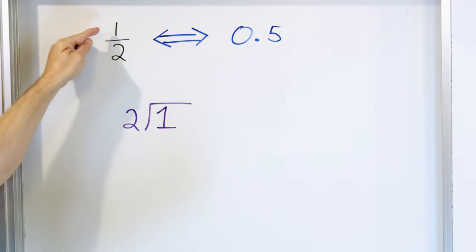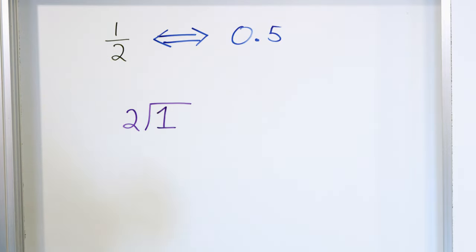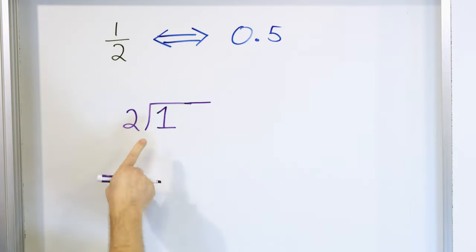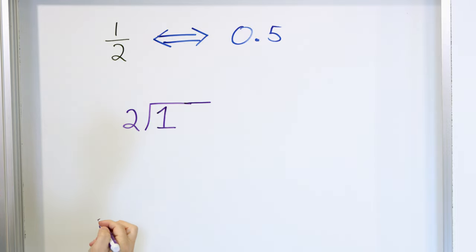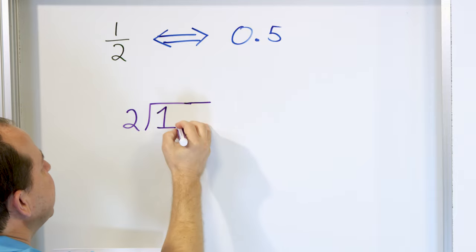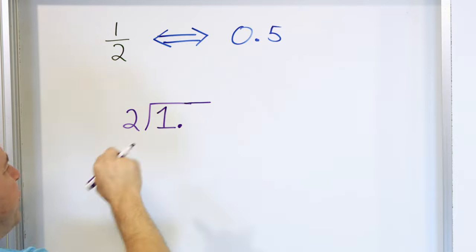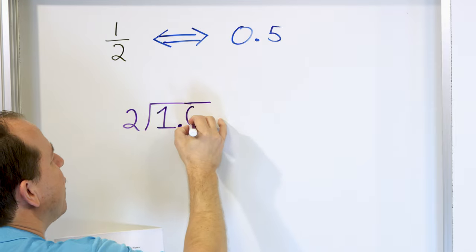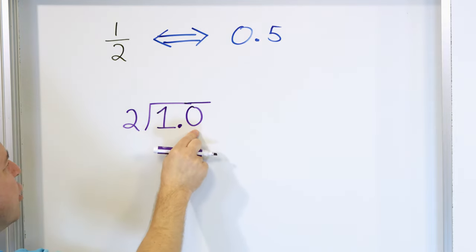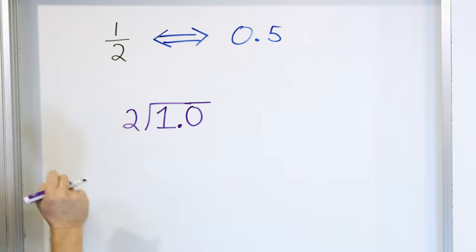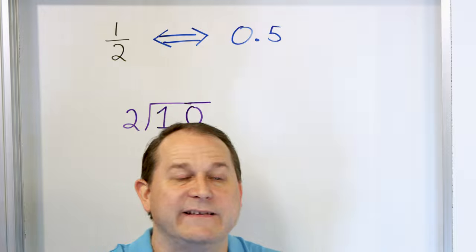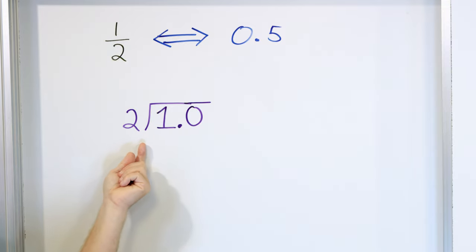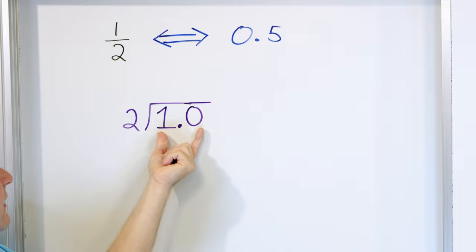Start with the fraction, write it as a division problem: 1 divided by 2. We ask ourselves, can 2 divide into 1? The answer is no, because 1 is too small. But don't forget that at every whole number there's always an invisible decimal point. So we're going to put that decimal here. Since 2 cannot divide into 1, we add a 0 after the decimal. Now 1.0 divided by 2 is the same thing as 1 divided by 2, because 1.0 is just one whole — making it 1.0 doesn't change the problem at all.